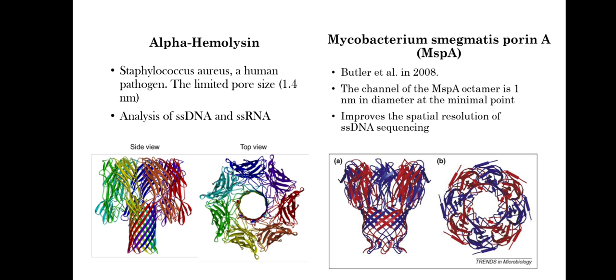MspA, Mycobacterium smegmatis porin A, is a very powerful nanopore for reading information from four nucleotides simultaneously. The channel of the MspA octamer is one nanometer diameter at the minimal point, so it is very efficient than alpha-hemolysin and can improve the spatial resolution of single-stranded DNA sequencing.